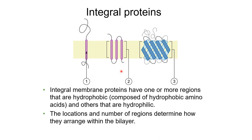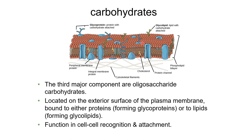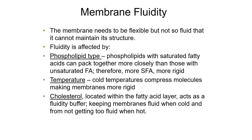Integral membrane proteins have one or more hydrophobic regions - a hydrophobic amino acid sequence - and others that are hydrophilic. The number of these regions determines how they arrange within the bilayer, and this can vary between cells. The third major component is carbohydrates - oligosaccharide carbohydrates on the exterior surface of the plasma membrane. They're bound to either proteins, forming glycoproteins, or to lipids, forming glycolipids. These function in cell-to-cell recognition and attachment.